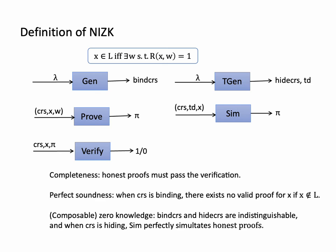A NIZK is required to satisfy three properties: completeness, perfect soundness, and composable zero-knowledge. Completeness says that honest proofs must pass the verification. Perfect soundness says that when the CRS is binding, there exists no valid proof for a statement not in the language. Composable zero-knowledge says that a binding CRS and a hiding CRS are indistinguishable, and when the CRS is binding, the simulator perfectly simulates the honest proofs.